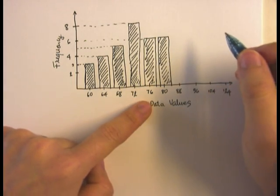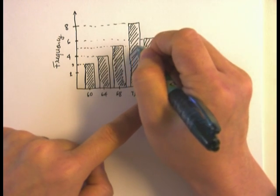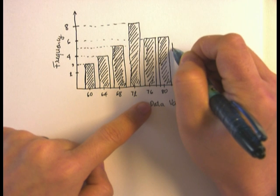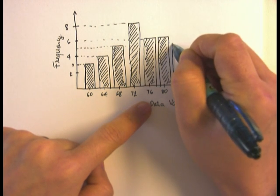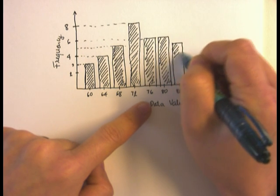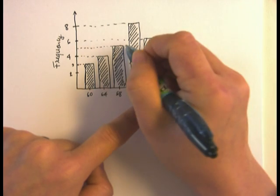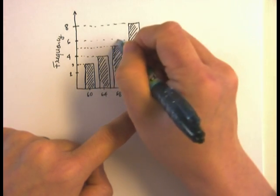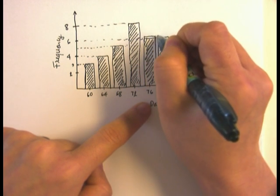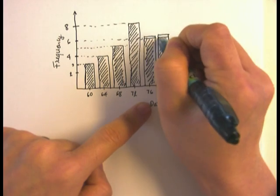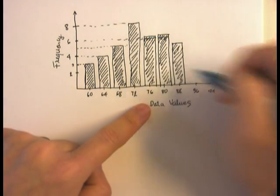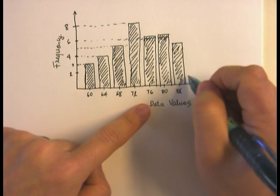88 has 5, so the bar for 88, right above 88, has height 5. That's about the same height—maybe I've cheated a little with this bar here, but they're supposed to be a little taller. And 96 has 1, so it's about halfway. That's for 96, and 104 and 124 are all the same height.